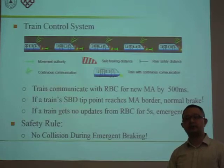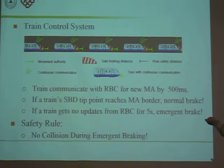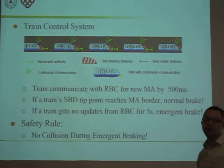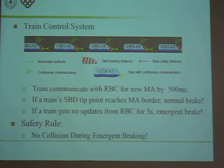Every train system has to communicate with RBC for updates of the movement authority, MA, every 500 milliseconds. If a train's SBD tip point — the safe braking distance tip point — reaches the end of the current MA, then the train must stop immediately. This kind of braking is called normal braking. Otherwise, if a train gets no updates from the RBC for five continuous seconds, then the train must also immediately brake. This kind of brake is called emergent brake.